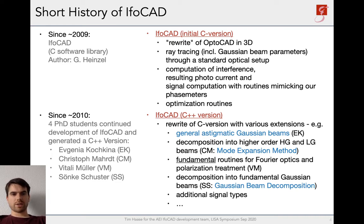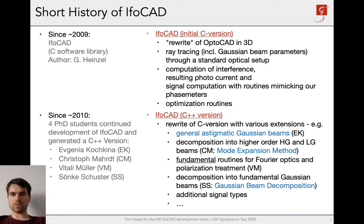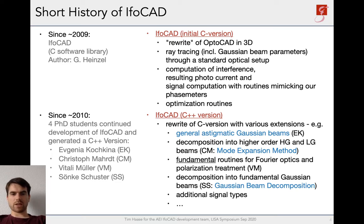In the following years, IFOCUT got some major new features and rewrites. Yevgenia Koschkina rewrote the whole library in C++ and implemented general astigmatic Gaussian beams. For non-Gaussian beams, there are two methods implemented: the decomposition into higher-order modes and the decomposition into fundamental Gaussian beams. Wittelin-Müller also implemented fundamental routines for Fourier optics and treatment of polarization of the beams, and additional signal types were added that can be extracted from the photodiode.